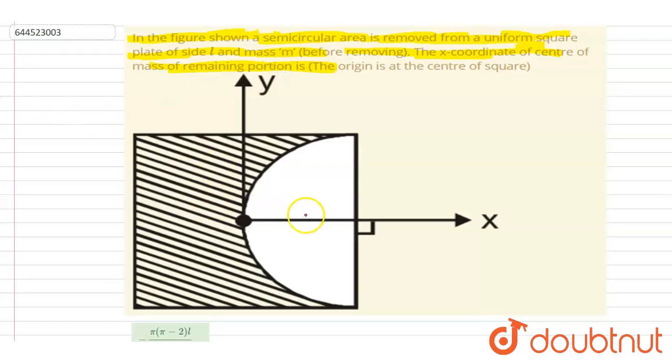If you see here, this is a semicircular disc, and this semicircular disc is removed from this square. So we know that the center of mass of the semicircular disc lies at a distance of 4r by 3π from the base.